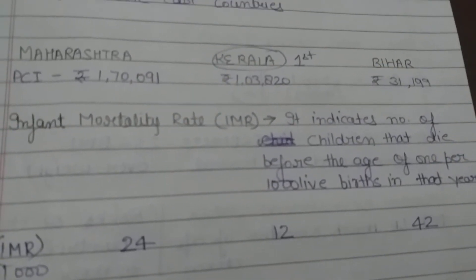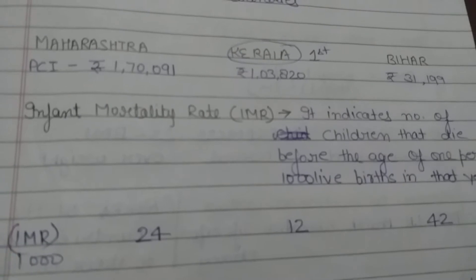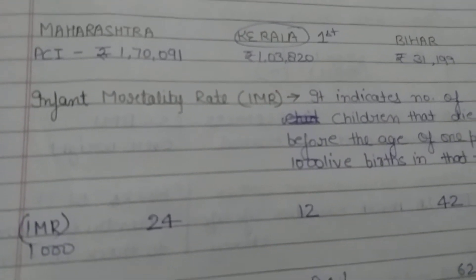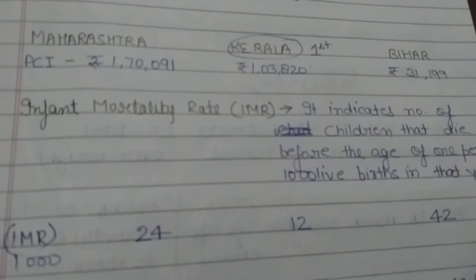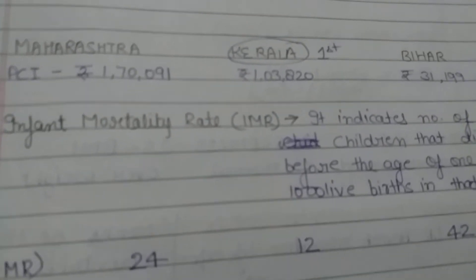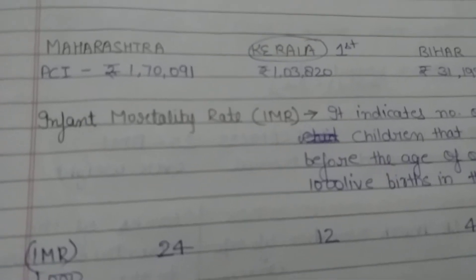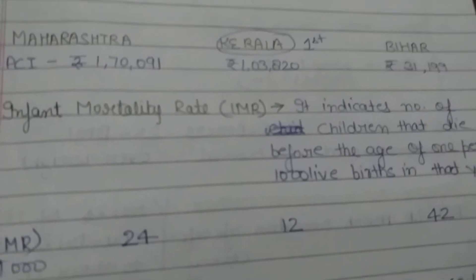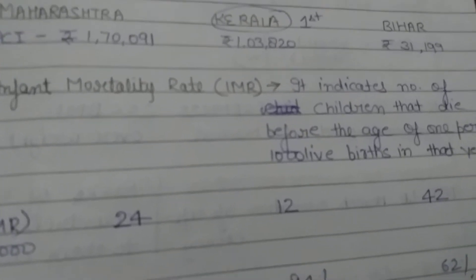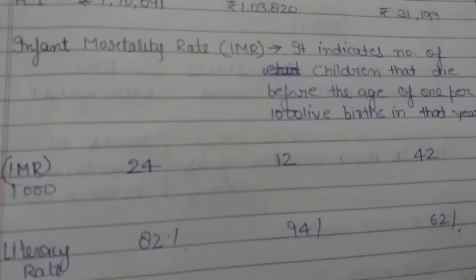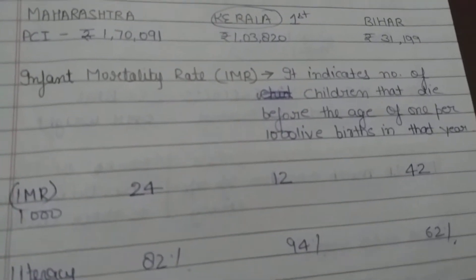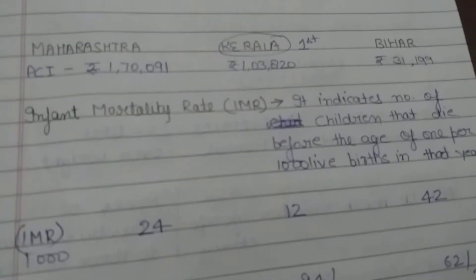If we talk about per capita income, the highest per capita income is Maharashtra's, so Maharashtra should be first — but Kerala is first. Why? Because, as we had discussed earlier, money cannot buy all things. Material things and non-material things, both are equally important. IMR is lower in Kerala, literacy rate is higher in Kerala, and Net Attendance Ratio is also higher in Kerala. So which state is better? Kerala.